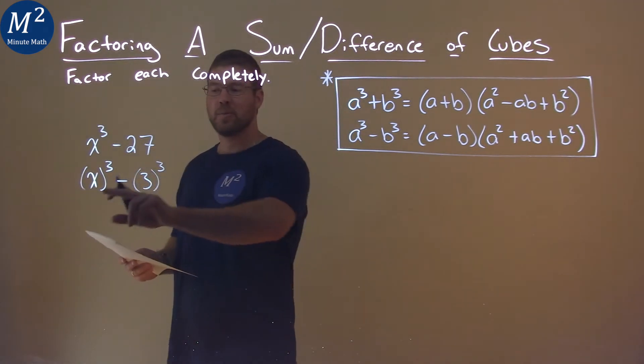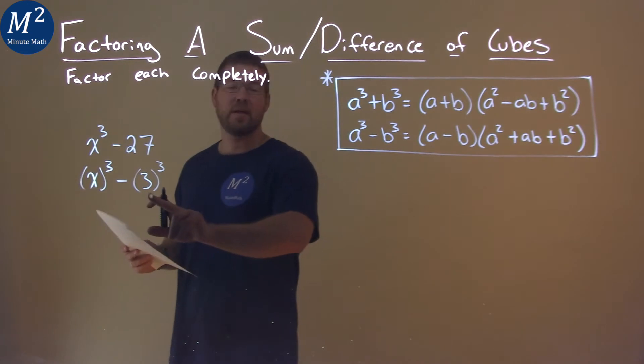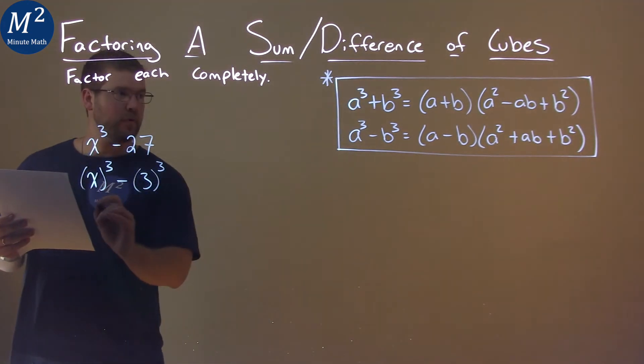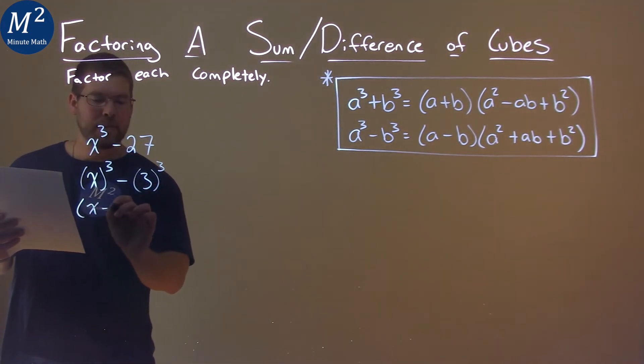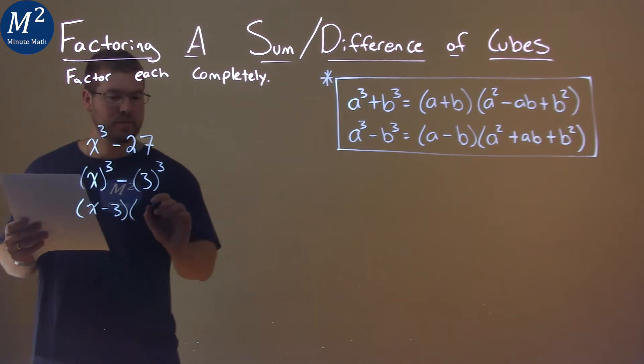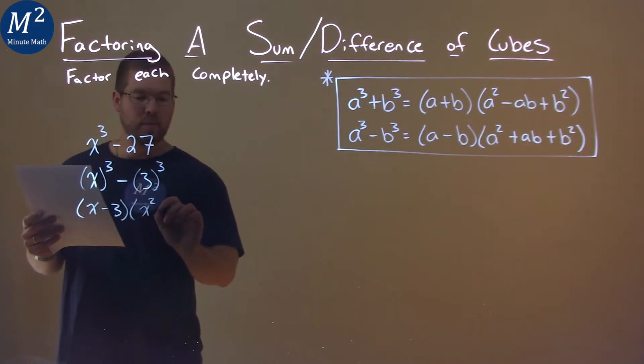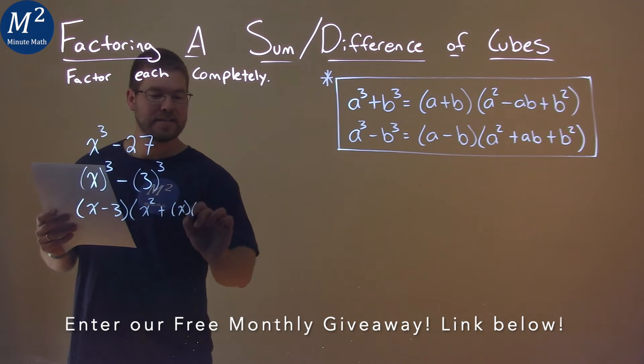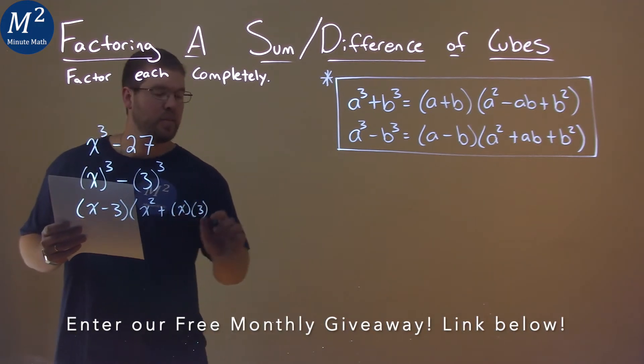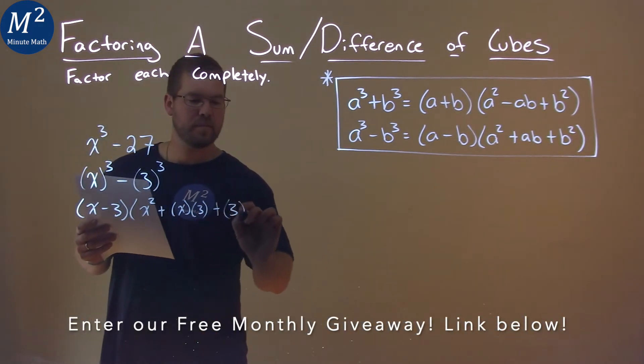Our a value will be x, and our b value will be 3. So following our formula, we have x minus 3 times x squared plus x times 3 plus 3 squared.